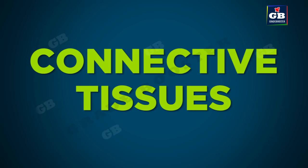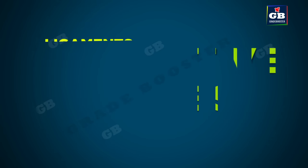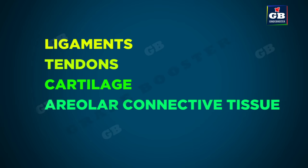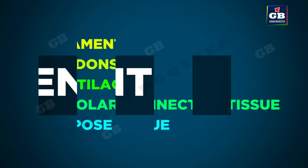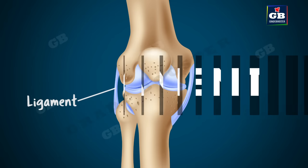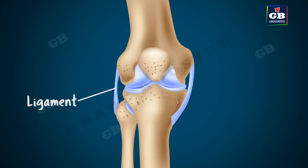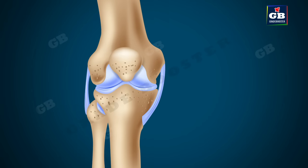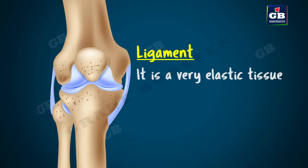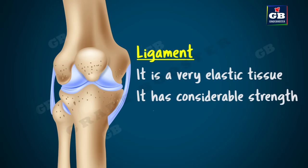Now let us learn about ligaments, tendons, cartilage, areolar connective tissue, and adipose tissue. Ligament is a kind of connective tissue that connects two bones together. This tissue is very elastic and has considerable strength. Ligament has very little matrix.